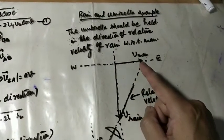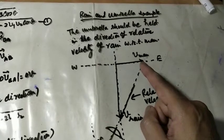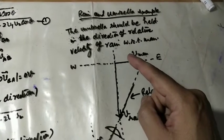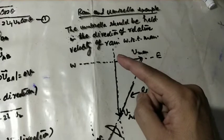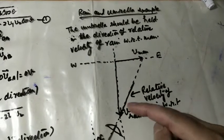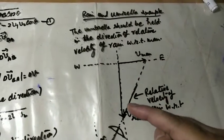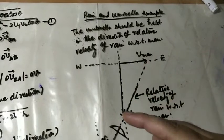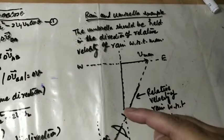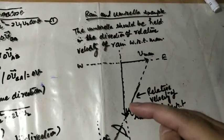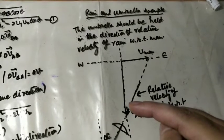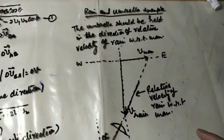Suppose a man is moving with velocity v man in east direction and rain drops are falling vertically. So this line is direction of relative velocity of rain with respect to man. And in this particular direction, you have to hold the umbrella.